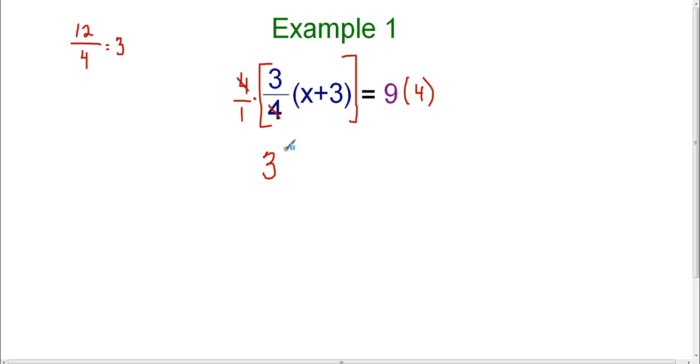We have 3 left, and then we have to keep the quantity x plus 3 in parentheses. On the right-hand side, we have 9 times 4, which is 36. We've been able to eliminate the fraction, and now we're down to a simple equation that we'll just have to distribute and solve.